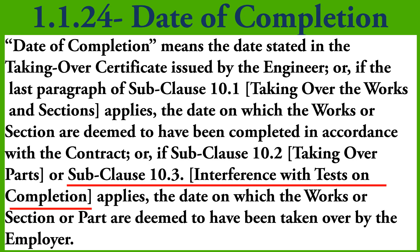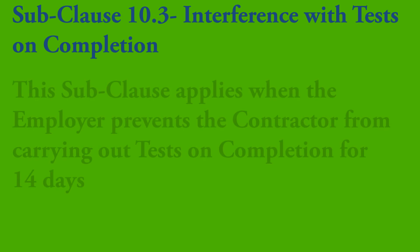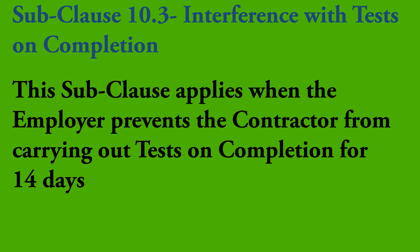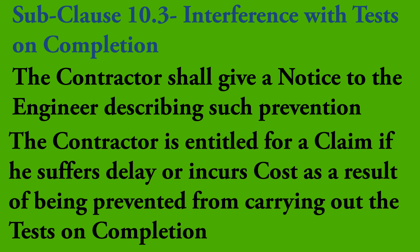The final sub-clause related to Date of Completion is sub-clause 10.3, Interference with Tests on Completion. If the contractor is prevented by the employer's personnel or any cause for which the employer is responsible from carrying out the tests on completion for a period of 14 continuous days, or a cumulative 14 days in multiple periods, then the intended date for completion of tests on completion becomes the Date of Completion, and the engineer shall immediately issue a Taking Over Certificate. The contractor shall give a notice to the engineer describing such prevention, and if the contractor suffers delay or incurs cost, the contractor shall be entitled to a claim subject to sub-clause 20.2.